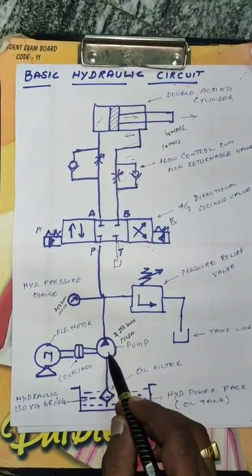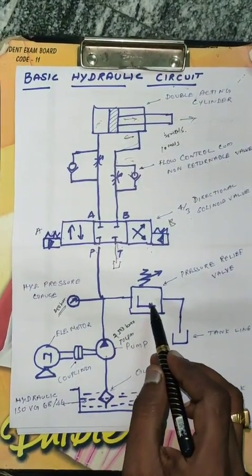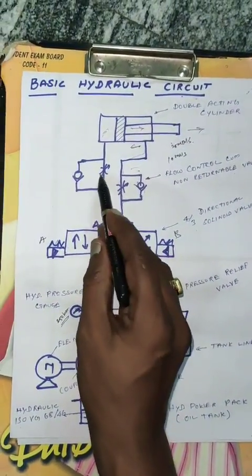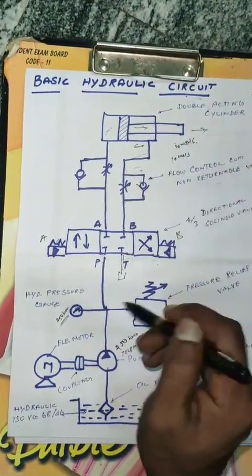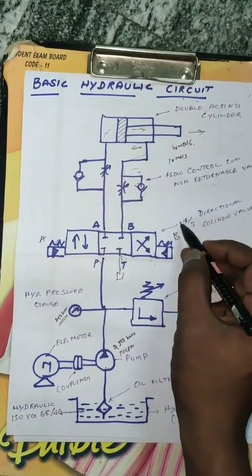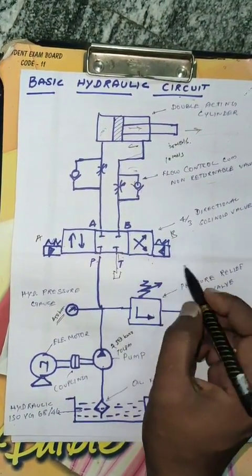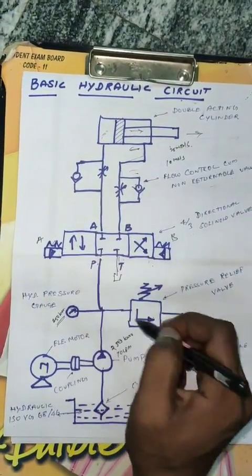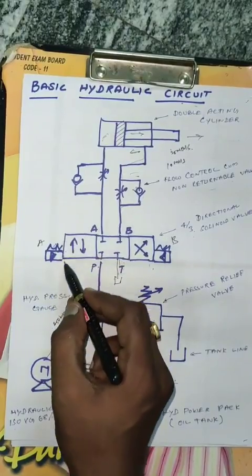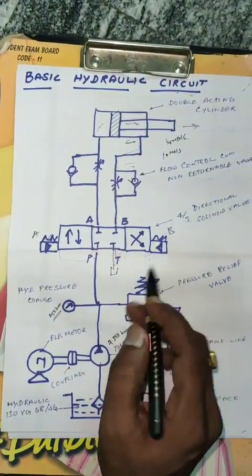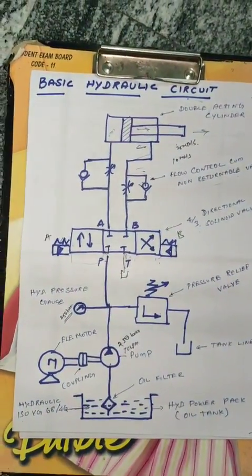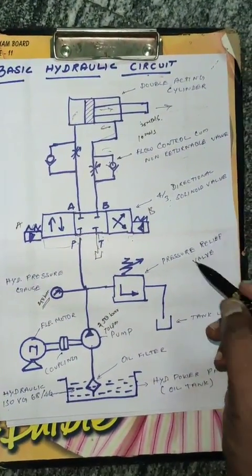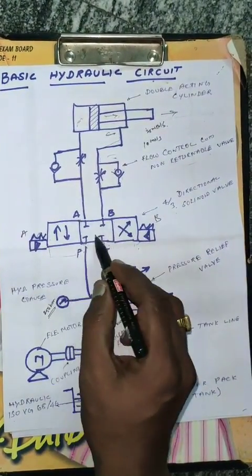Ideally: tank, filter, pump, pressure relief valve, flow control valve, 4 by 3 direction control valve, and double acting cylinder. 4 by 3 — A, B, P, T positions. Three position valve: left position, middle position, right position — about 5 percent. Analysis of 4 by 3 valve: conventional configuration. This is the hydraulic circuit configuration.